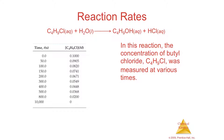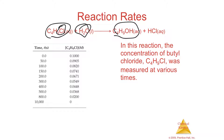In the textbook example, butyl chloride is placed in water and turns into an alcohol — butyl alcohol. Chlorides are taken off and hydroxides are added, producing the butyl alcohol. The butyl chloride — the starting material — is going away, being eaten away, while the alcohol is being produced.